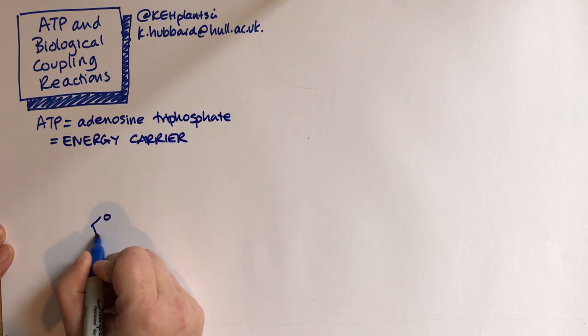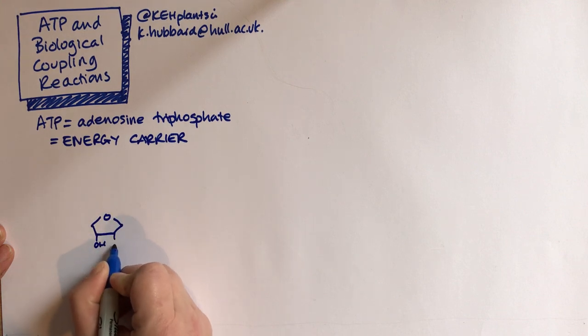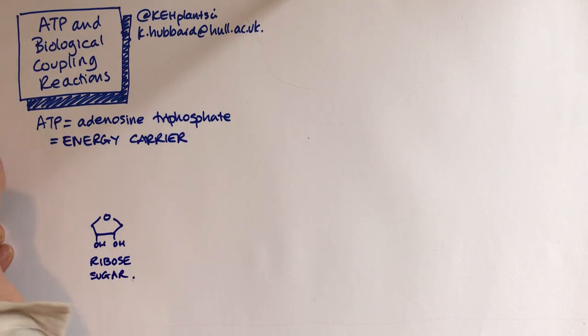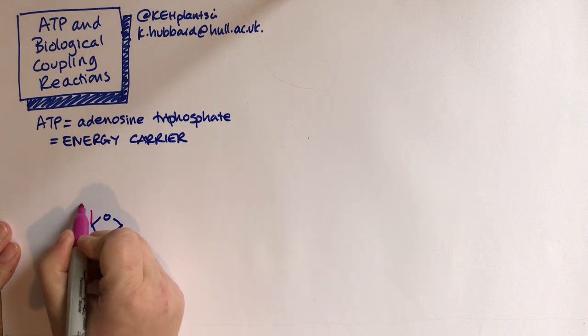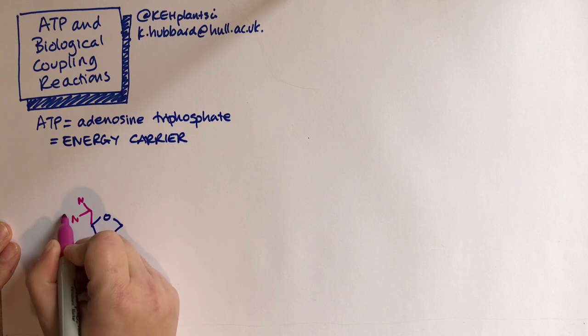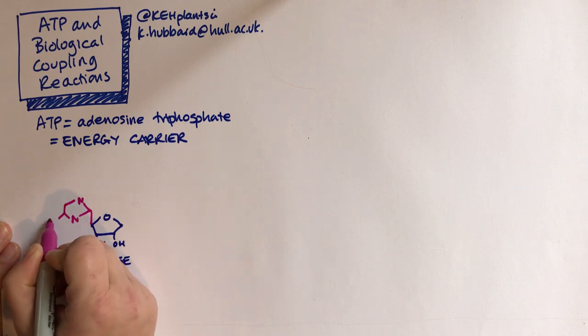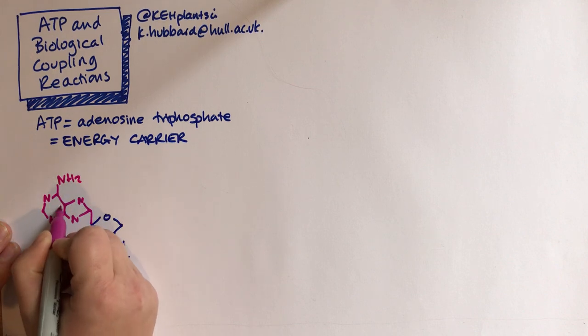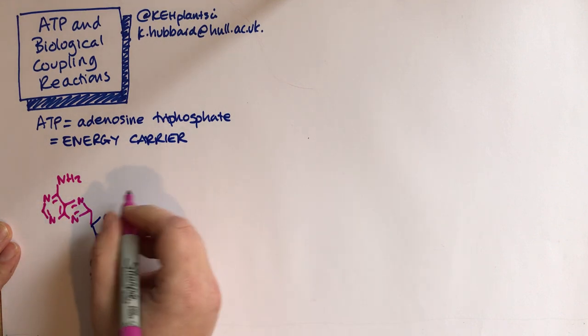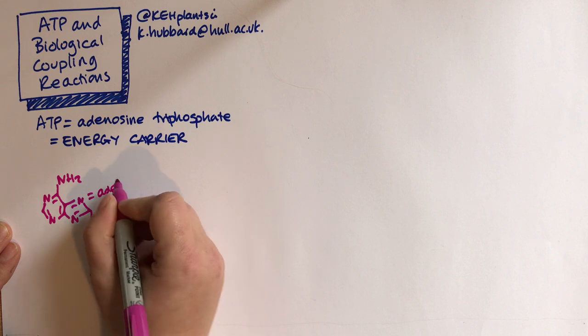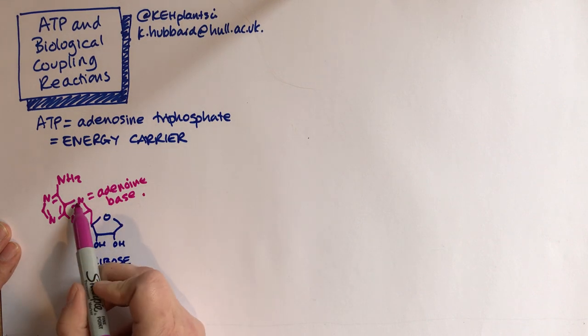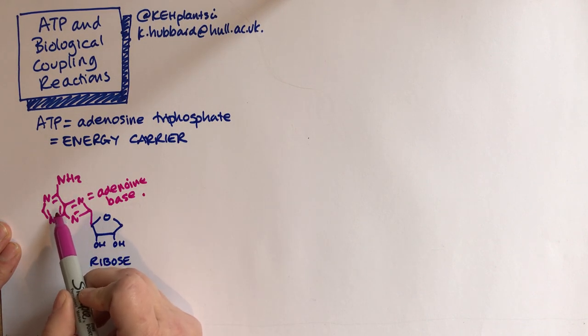It's a nucleotide, so in the middle it has ribose sugar. Then on one side of the molecule it has a nucleotide base, so it has the base adenine. There's some double bonds in there as well, but you don't need to worry too much about that. So that's the base. In DNA we'd be interested in what's going on at that end of the molecule in terms of base pairing.